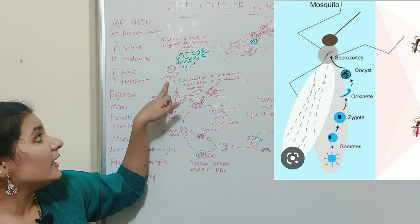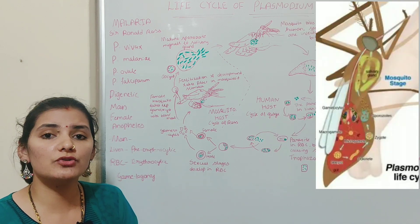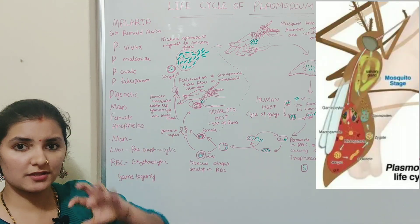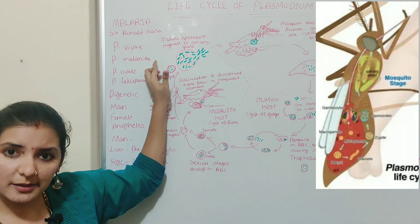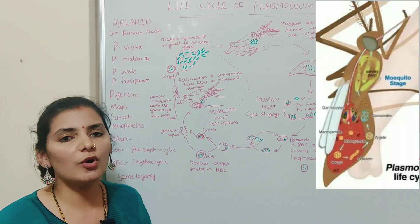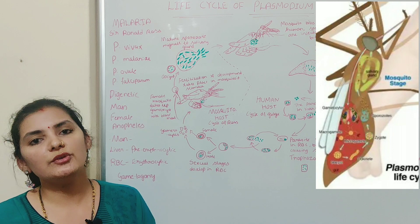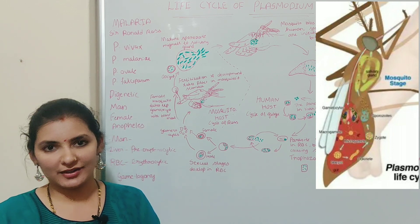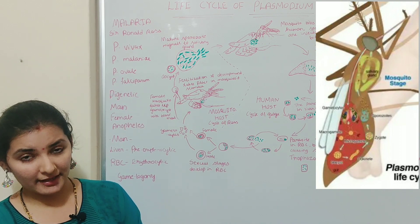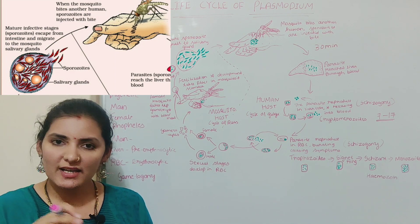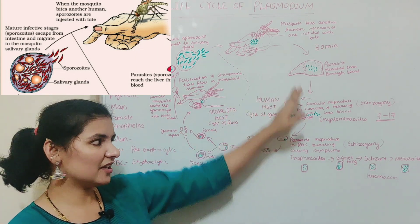The zygote encloses itself in a cyst wall to form an oocyst, which develops by absorbing nutrients from the host body. Inside the oocyst, the zygote undergoes division to form sporozoites — slender, sickle-shaped, and highly motile. Once the oocyst ruptures, it releases sporozoites into the body cavity of the female Anopheles mosquito. Since the sporozoites are highly motile, they migrate into the salivary gland. When this mosquito bites a healthy person, the sporozoites are introduced into that person, thereby initiating a new cycle.